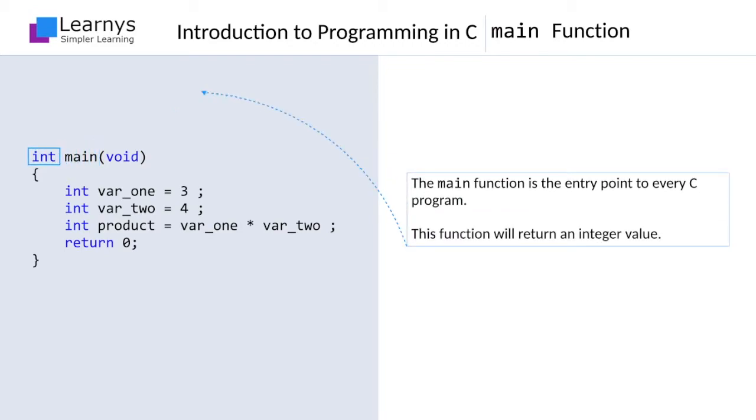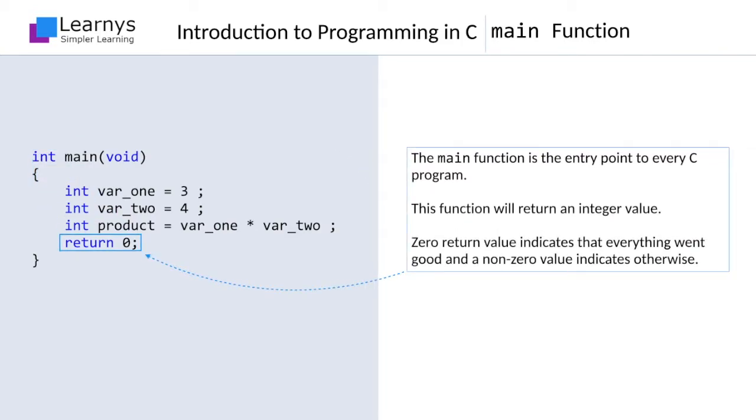The int tag before the name of the function indicates that this function will return an integer value, and the last statement in this function does exactly that. It returns 0 to the entity which calls this function. Since this is the main function, the value is returned to the operating system, which is actually responsible for running and managing this program. A 0 return value indicates that everything went good, and a non-zero value indicates otherwise.